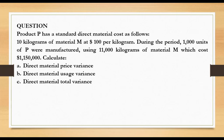Question: Product P has a standard direct material cost as follows — 10 kilograms of material M at $100 per kilogram. This is the standard cost. During the period, 1,000 units of P were manufactured using 11,000 kilograms of material M, which cost $1.15 million. Calculate the direct material price variance, direct material usage variance, and the direct material total variance.